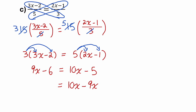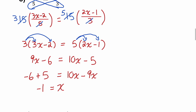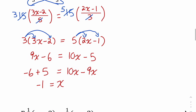On the left side, I'll have my constant terms. I have negative 6 that's already on the left. On the right, I have a negative 5 — when I bring that term to the other side, it becomes a positive 5. So on the left, I have negative 6 plus 5, which is negative 1. And on the right, 10x minus 9x is 1x. So my final answer is x is equal to negative 1.